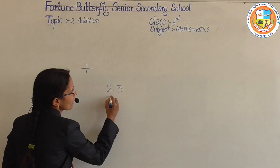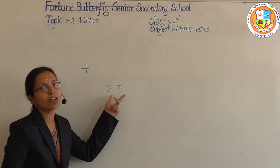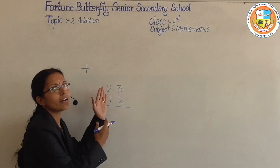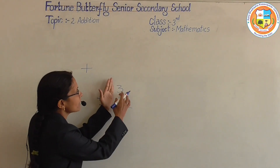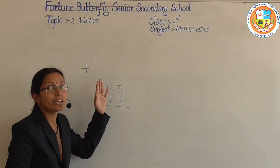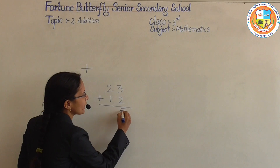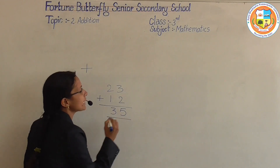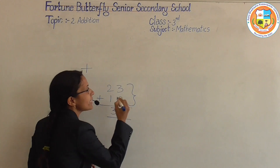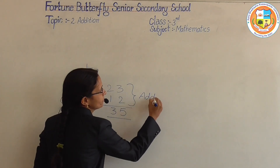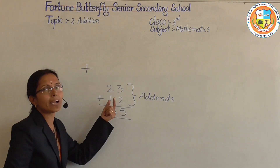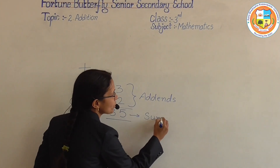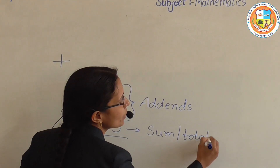For example, I am taking 23 and 12. I am adding these numbers. We will add the numbers from the right-hand side. First we add 3 and 2. What is 3 plus 2? It is 5. Now 2 plus 1, how much? It is 3. So 35 is the answer. The numbers which we add are called addends, and the result is called sum or total.